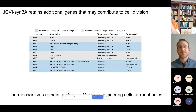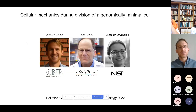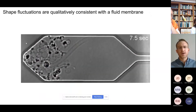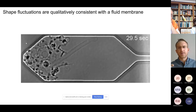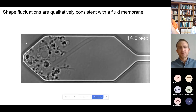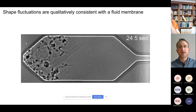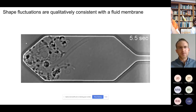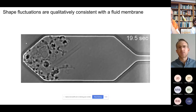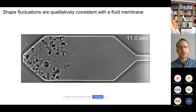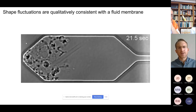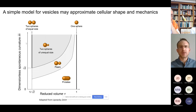We are currently considering physical descriptions of cellular mechanics to generate hypotheses to guide future experiments, in collaboration with John Glass and Elizabeth Strachowski at NIST. How might one conceptualize the physical properties of the cell? Taking pictures every 500 milliseconds, we observed that cell shape fluctuates over that time scale. The cells do not have a peptidoglycan cell wall, and their shape fluctuations are qualitatively consistent with having a fluid membrane — at least qualitatively, the description of vesicles or liposomes might be applicable.